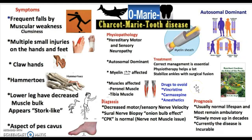Moving on to prognosis, this is fairly straightforward. Charcot-Marie-Tooth disease does not affect one's lifespan — those with the disease generally have a normal lifespan. It remains mostly ambulatory and slowly progresses in severity over the decades, so the older you get, the worse it becomes. Importantly, the disease is currently incurable; while solid treatments exist, a cure has not yet been found.